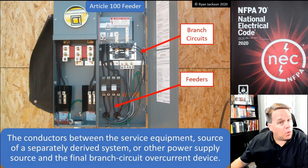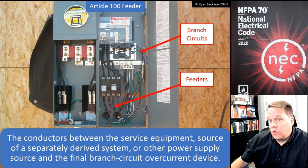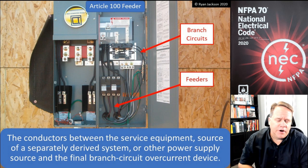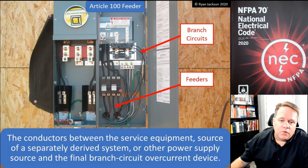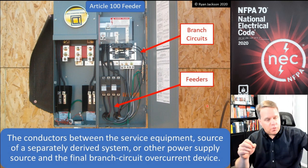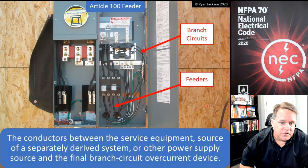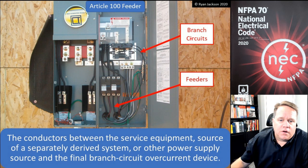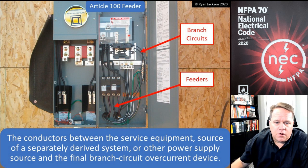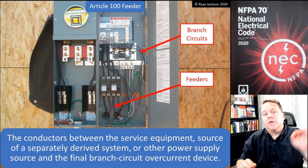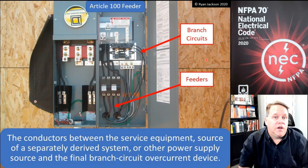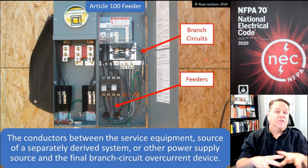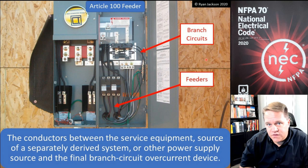Feeder conductors run from the service equipment — or the source of a separately derived system or other power supply source — to the final branch circuit overcurrent devices. In this picture, we've got what's probably a 400-amp service with two 200-amp breakers supplying 200-amp panels in a house — maybe one in the basement and one upstairs. Those are feeders: they start at those two breakers and end at those two panels. Over on the right, we've got branch circuits — maybe a two-pole 30 and a two-pole 40 going to two air conditioners, right out of the breaker into the disconnect and then the AC units.